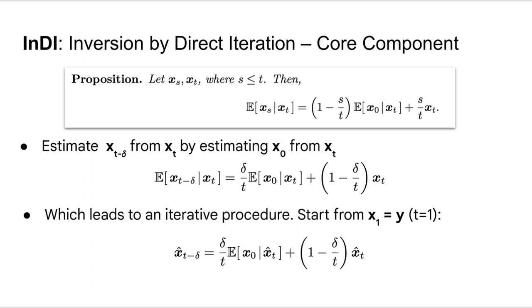We can convert this into an iterative procedure, where we start from the low-quality observation y, and then estimate a slightly less degraded image by applying this recurrence. We do this till we reach time t equals zero. Of course, to apply this formula, we require to know how to compute the MMSE estimate of the clean image at any x_t.